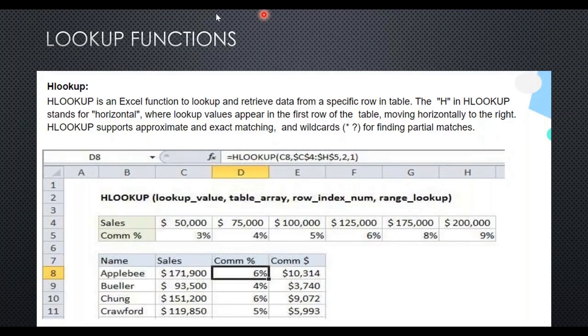Two means the number of positions to move downwards after the value is found. The last entry — one — stands for TRUE. FALSE is zero in Excel, TRUE is one. In the previous VLOOKUP example I used FALSE for exact match, but here I want an approximate match, so I write one or TRUE.